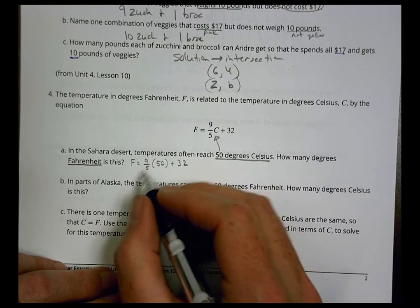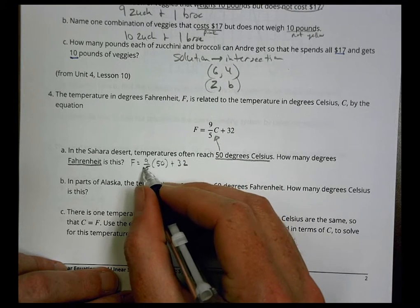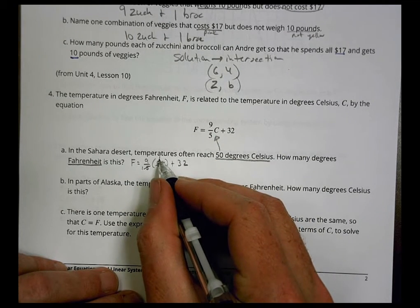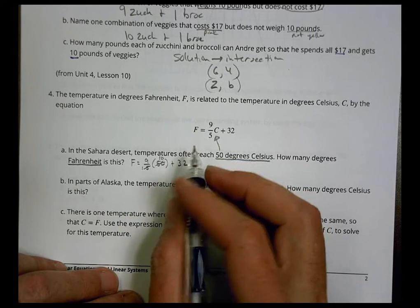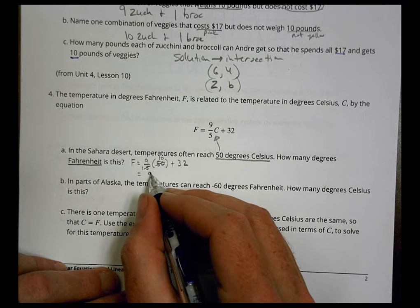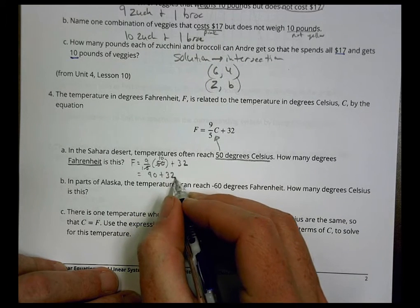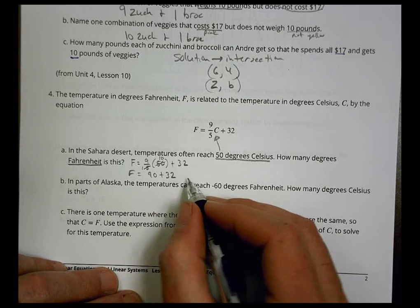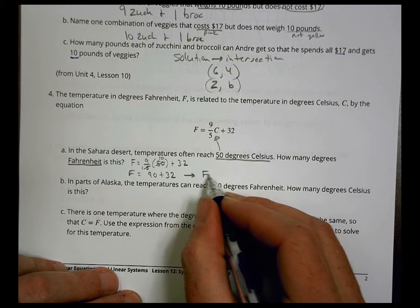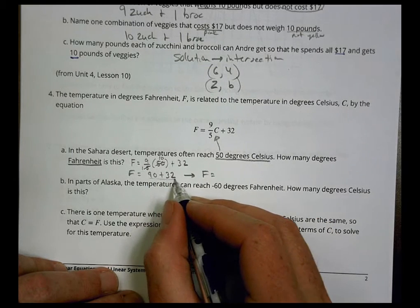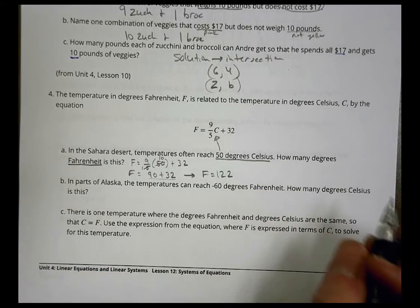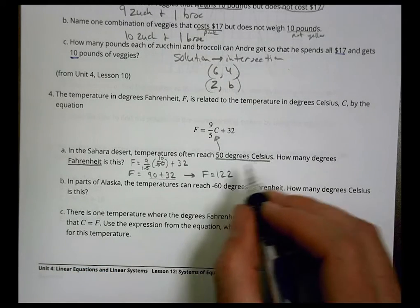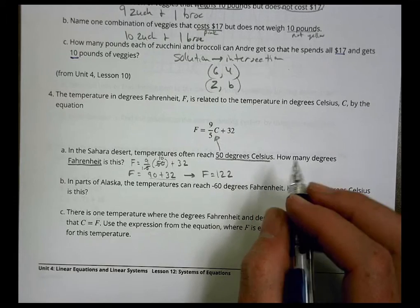That's our equation we're going to solve. First thing I can do is reduce here. 5 goes into 50 ten times. I can multiply here: 9 times 10 is 90. So this is equal to 90 plus 32, and 90 plus 32 is going to be F equals 122. So 50 degrees Celsius in Fahrenheit is 122 degrees.